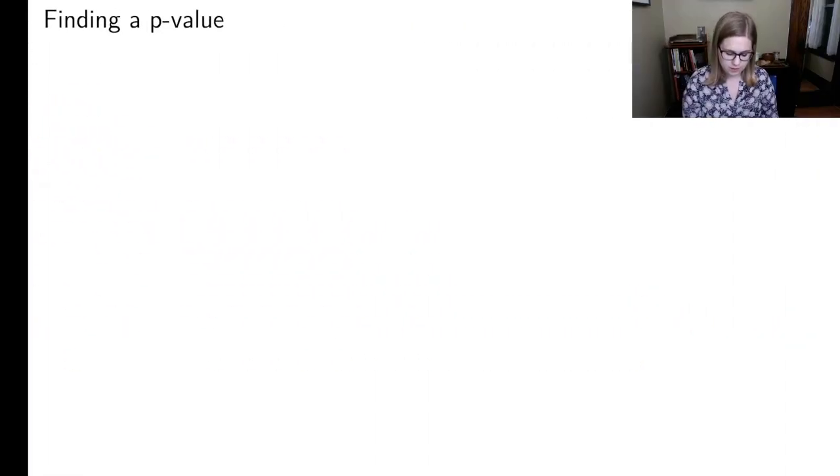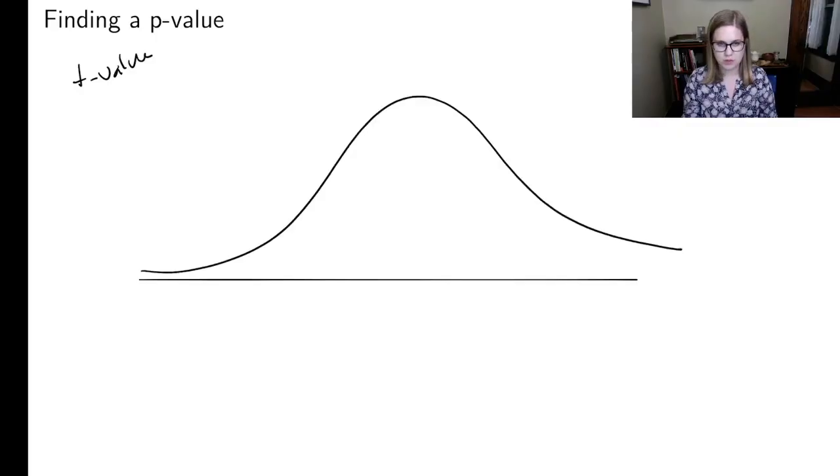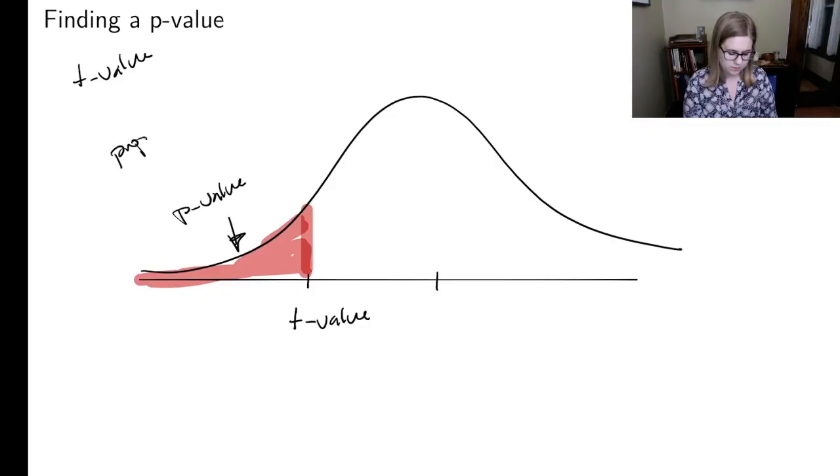So again, just a little bit of a reminder. If we're thinking about a theoretical distribution, and we have a t value, and we want to find a p value, what we would do is we would compare it to a t distribution, something like this, and we're going to say let's look at where our t distribution is in the context of the distribution, and then we're going to say the p value is the proportion of the distribution that is as extreme or more extreme than the t value, so this would be my t value, and then my p value is the proportion of the distribution that is as extreme or more extreme than the test statistic.